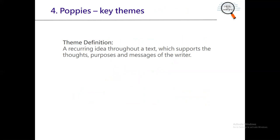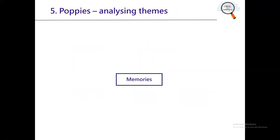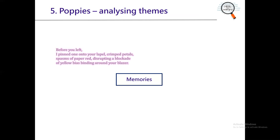So the big themes in this poem. Memories certainly seem very important, as does fear, and the idea of loss versus freedom — her perspective versus his. Starting with memories: one of the most recent memories she has is how she was still helping her son moments before he left. She pins a poppy onto his uniform, which could be a metaphor for the respect she has for soldiers, but it could also be how she may have to remember him one day, like the others who fell — you could even call it foreshadowing.